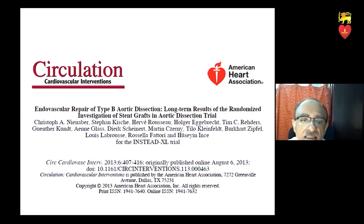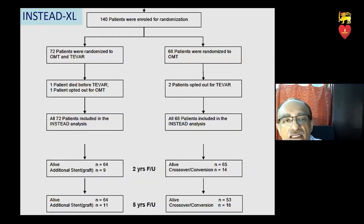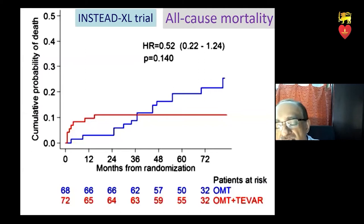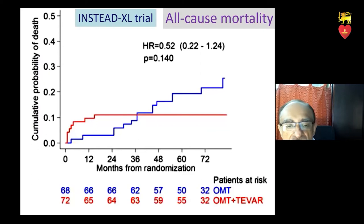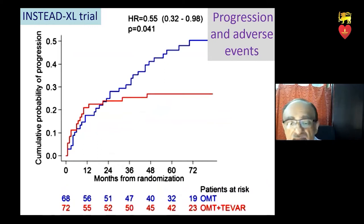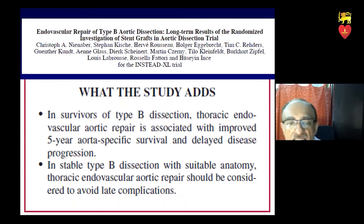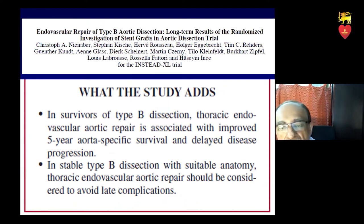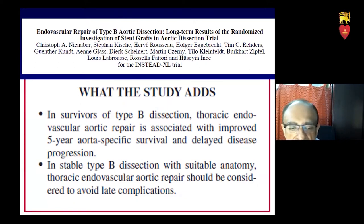The INSTED trial randomized and compared endovascular repair to optimal medical therapy over six years. All-cause mortality in the endovascular group remains steady after the first year, whereas in the optimal medical therapy group it keeps rising — the same with aorta-specific mortality and disease progression and adverse events. This study showed that for survivors of type B aortic dissection, endovascular repair is associated with improved survival and reduced disease progression compared to optimal medical therapy. In stable type B dissection with suitable anatomy, endovascular repair should be considered to avoid late complications.